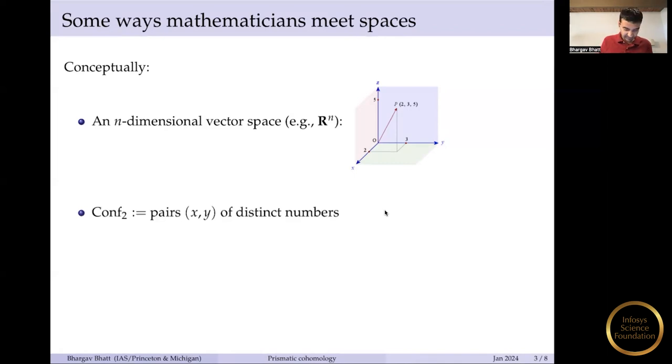Here's a slightly more interesting example, which is what I call conf2. So it's pairs x and y of numbers which are not equal to each other. So it's essentially the same as R^2. You have two numbers, x and y, but there's a condition, and the condition is that x is not equal to y. And so how would you draw such a space? Well, it's actually very easy. You look at R^2, which is, as I said before, a plane. But now you want to impose a condition, and the condition is that you're not on the diagonal. The diagonal is the set of points where x equals y, so you remove the diagonal and you get kind of this disconnected space with two components, and that's the space conf2.